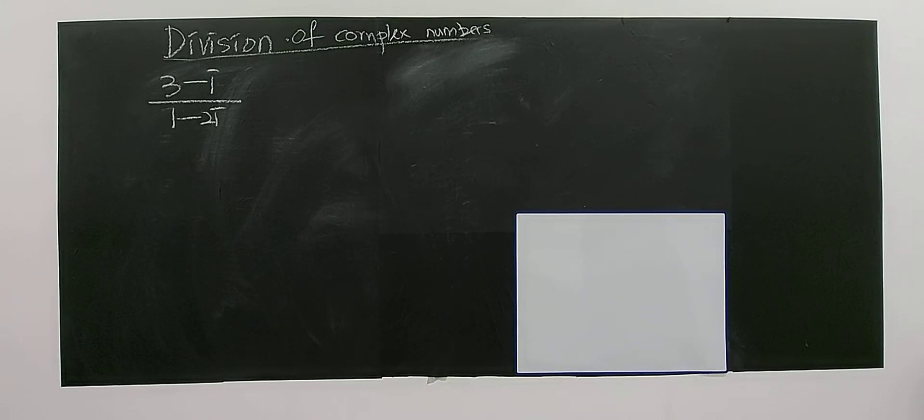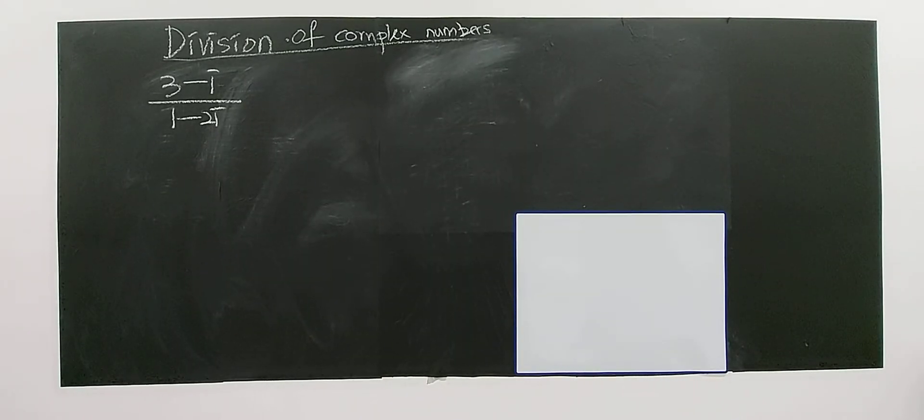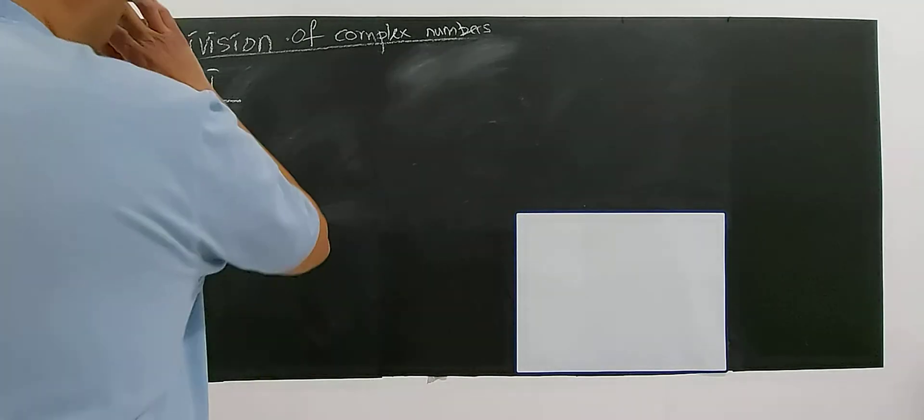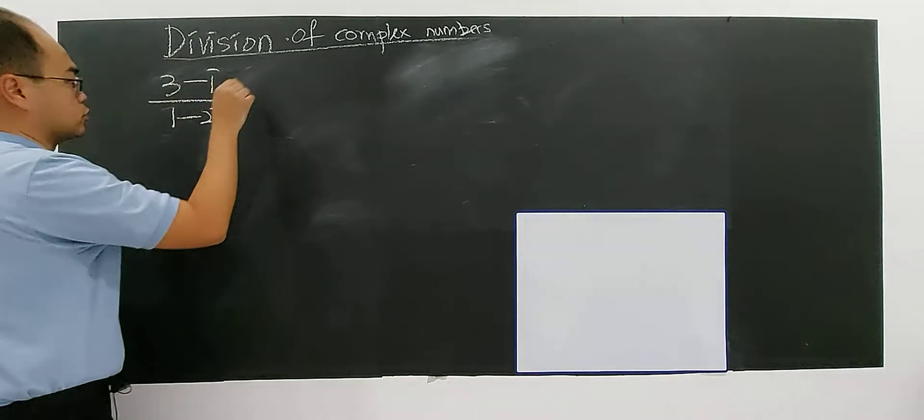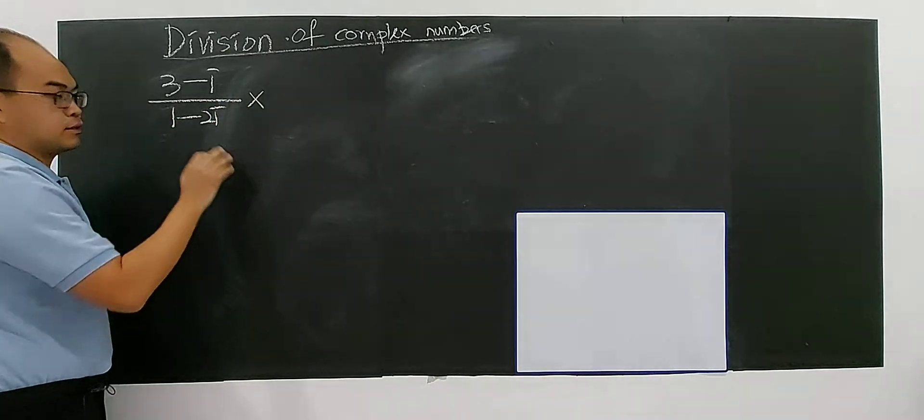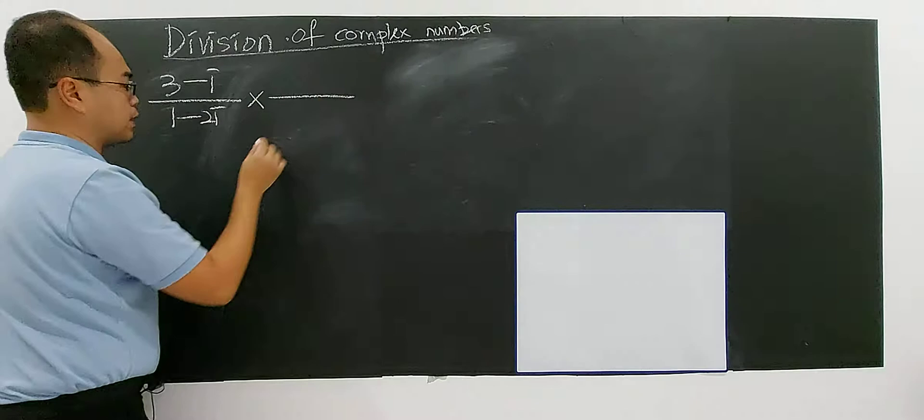Hello, let's look at these examples. It's still the same division of complex numbers. Now I'm going to directly do my method, the faster way. I need to multiply the conjugate.